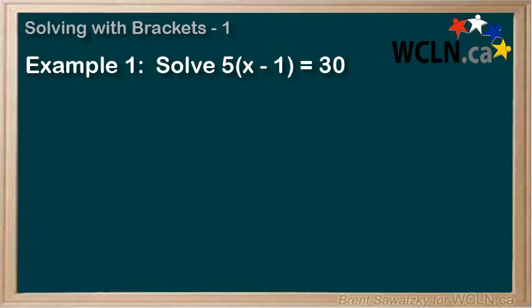Example 1: Solve 5 times (x minus 1) equals 30. We notice that we have some brackets in this equation, and we're told to solve the equation, which we can interpret as isolate our x. But x is in the brackets, so how are we supposed to deal with this?